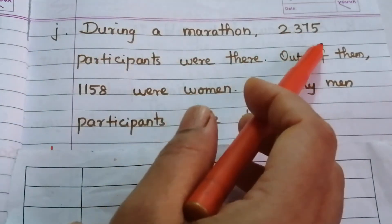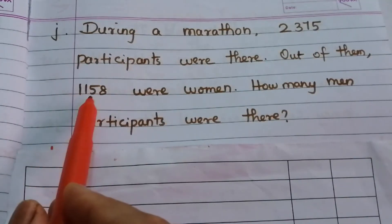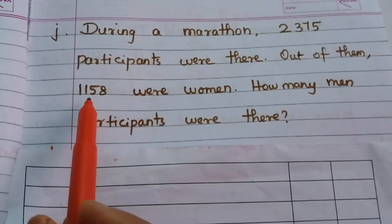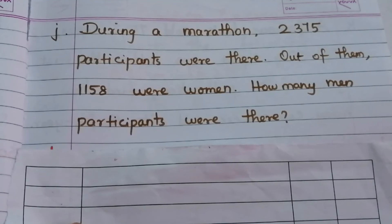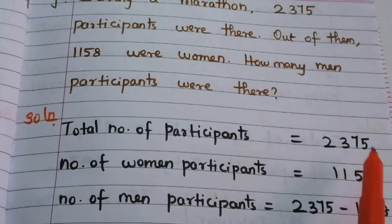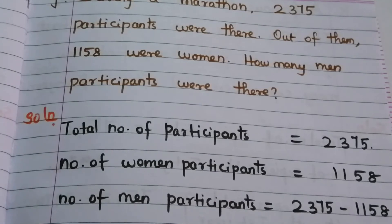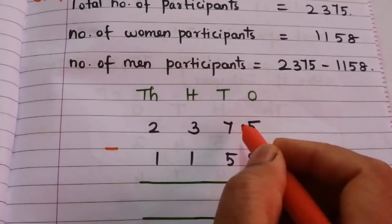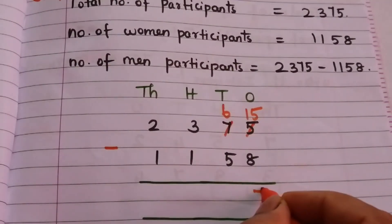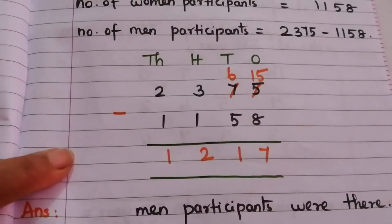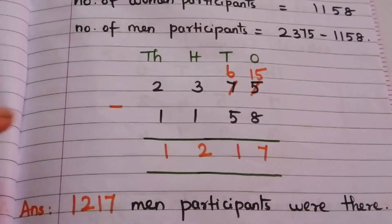J: During a marathon, 2,375 participants were there. Out of them, 1,158 were women. How many men participants were there? Total participants = 2,375; women = 1,158. Men = 2,375 minus 1,158. Cannot subtract 8 from 5, so borrow — 15 minus 8 = 7. 6 minus 5 = 1. 3 minus 1 = 2. 2 minus 1 = 1. The answer is 1,217 men participants.